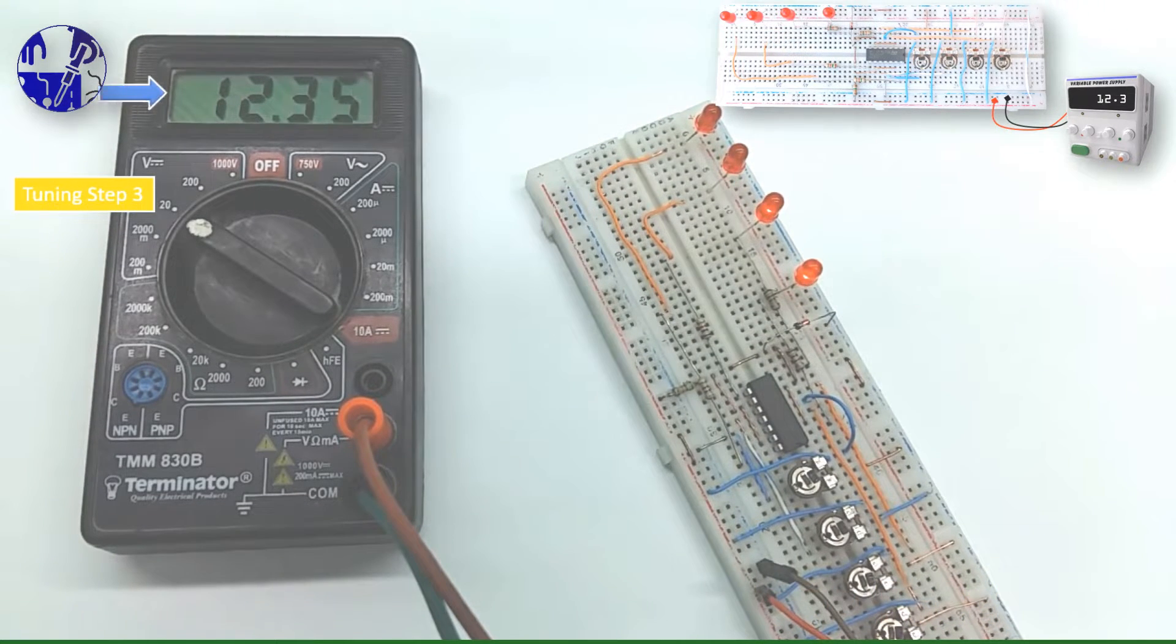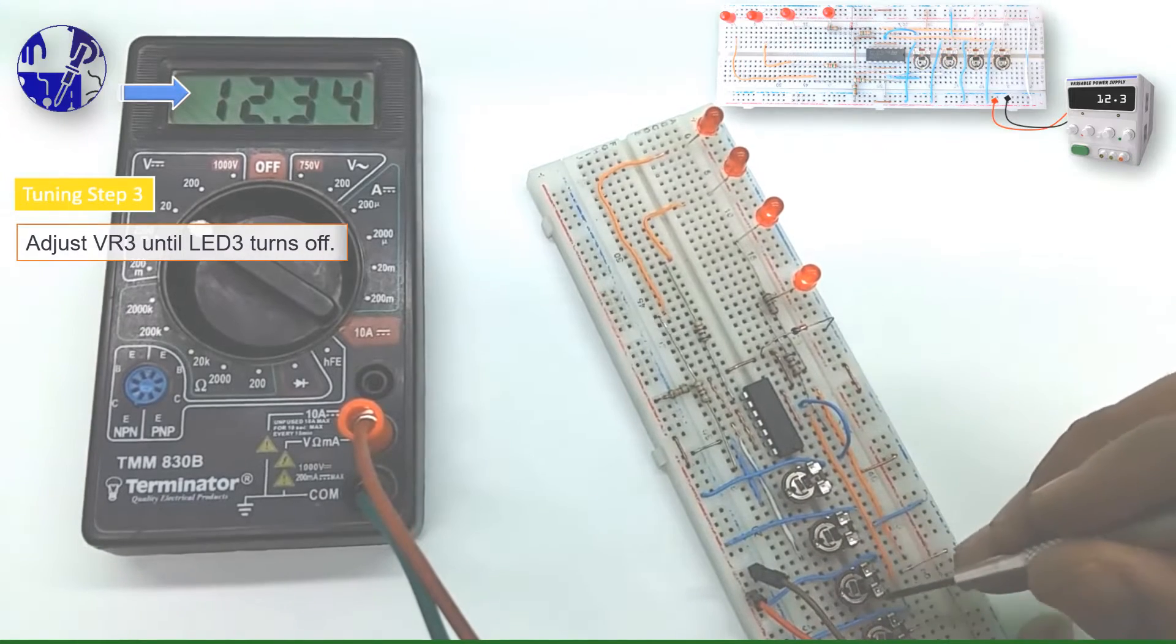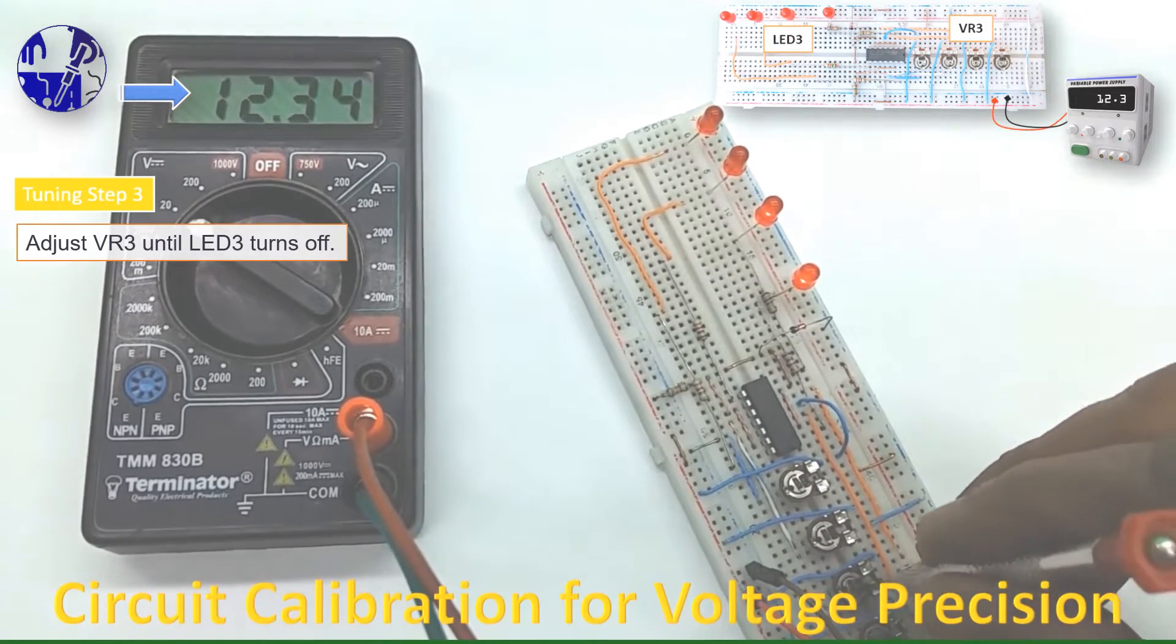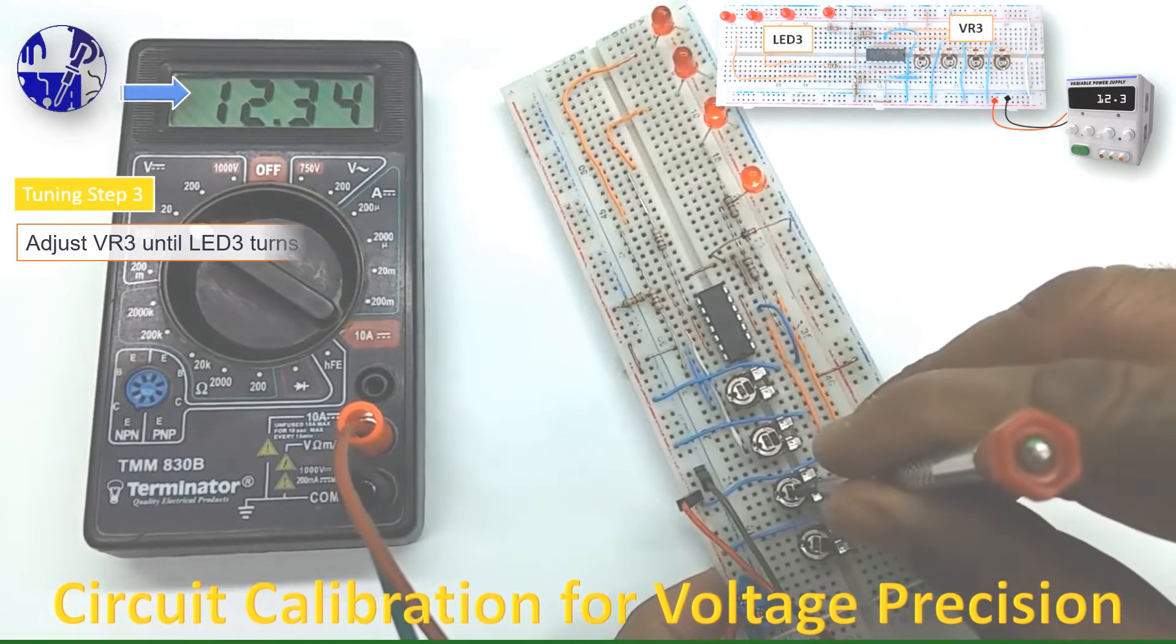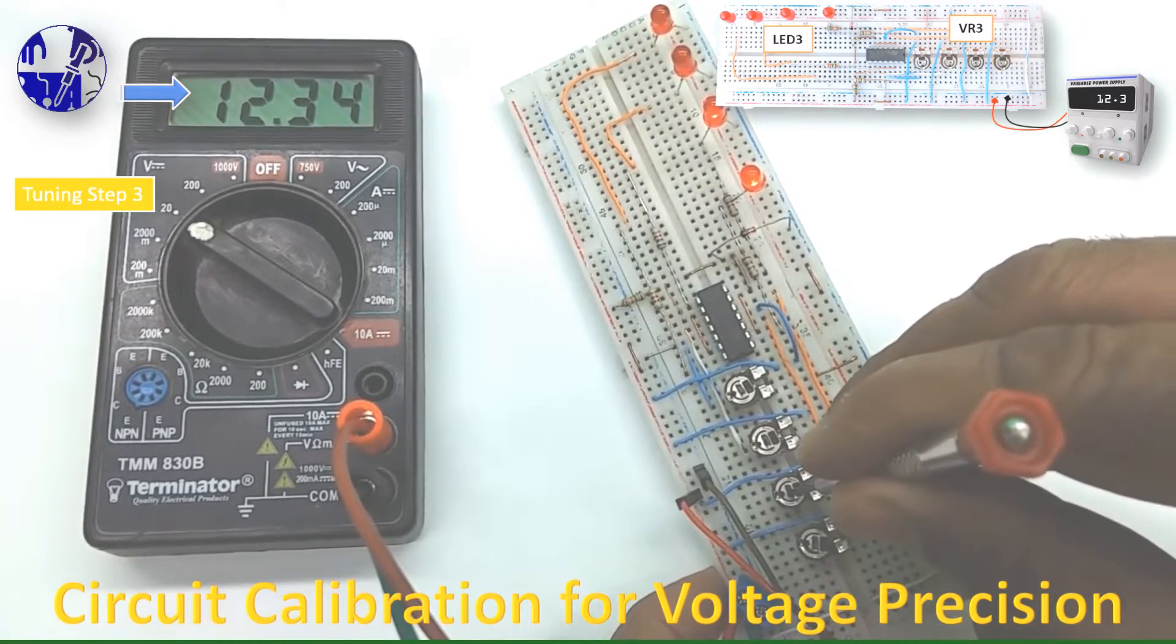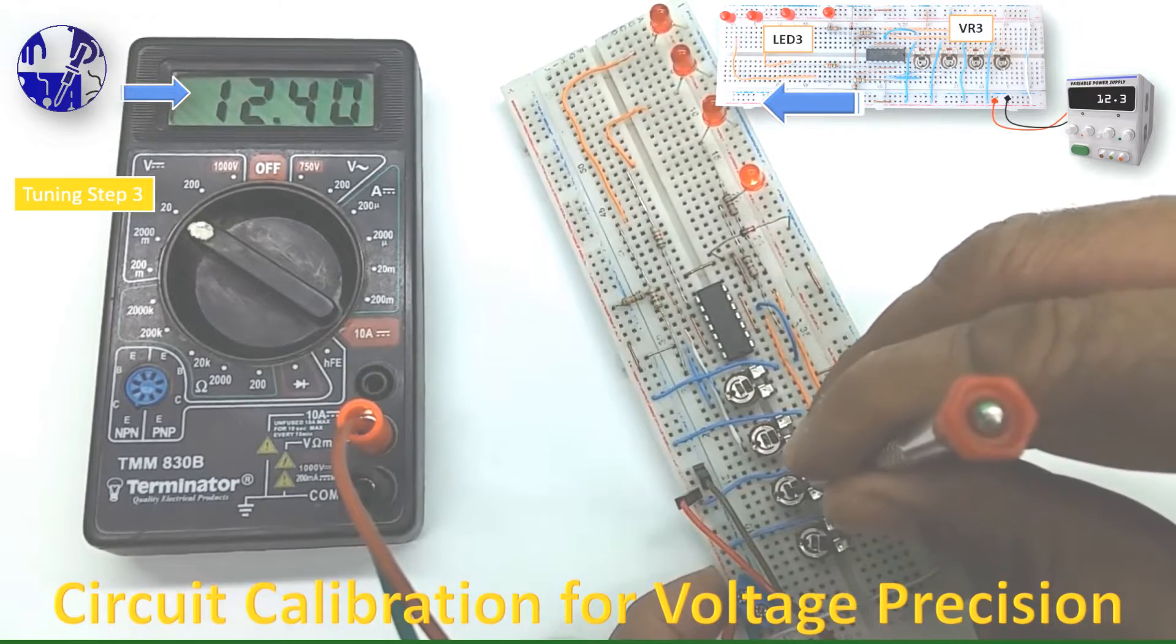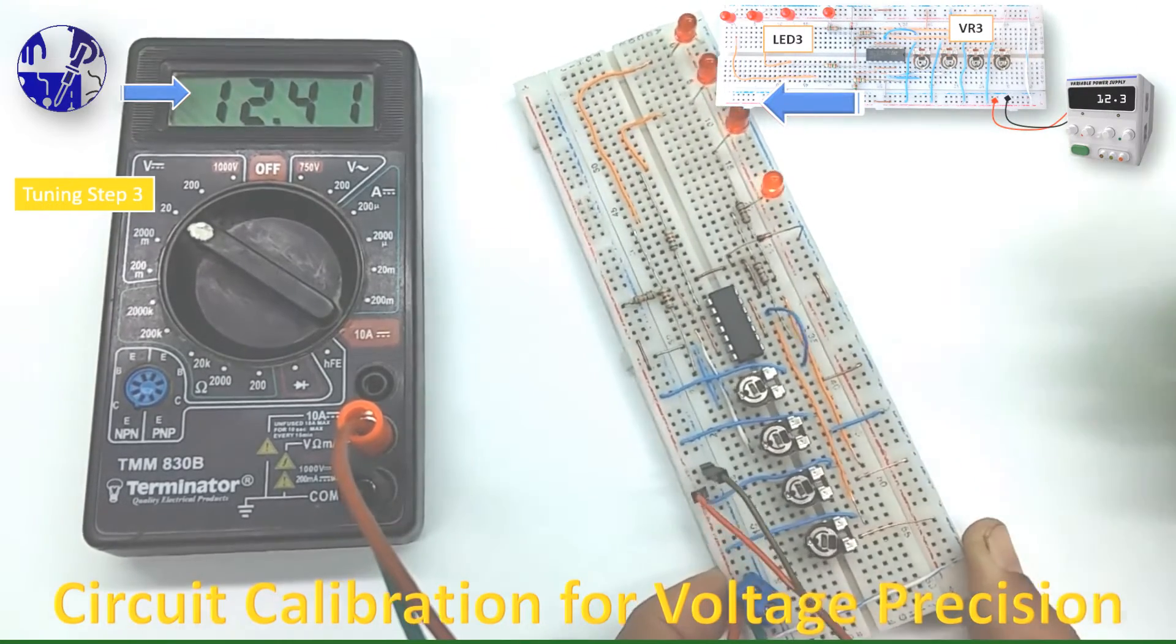Now change the voltage of the power supply to 12.3 volt and again adjust the VR3 until LED 3 turns off. This is the second last level of the battery.